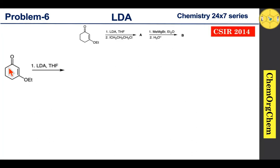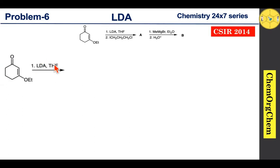In the first step, this ketone reacts with LDA. LDA we have already discussed on our channel — if you missed the LDA series, you can find the link in our description box. LDA is a non-nucleophilic strong base which readily takes a proton from the less substituted side. This side has an active methylene group with two acidic protons. When you use LDA, it readily removes one of the protons to produce the corresponding enolate ion.